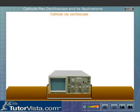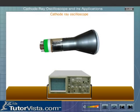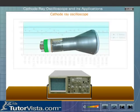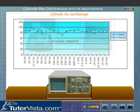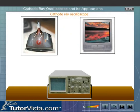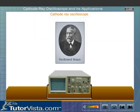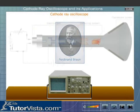Cathode ray oscilloscope is similar to a discharge tube in many ways. It is widely used in acoustic research, television production, and engineering to study the nature of wave motion and in electronics. The German physicist Ferdinand Braun developed the first cathode ray oscilloscope in 1897.